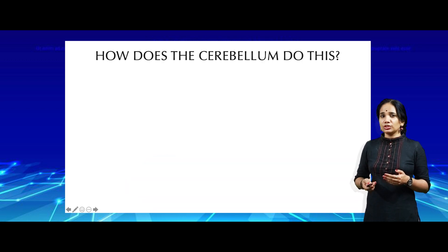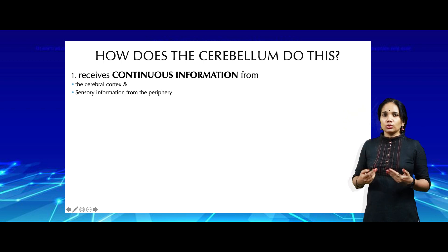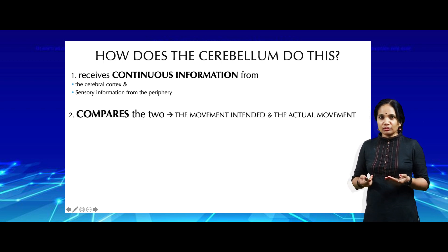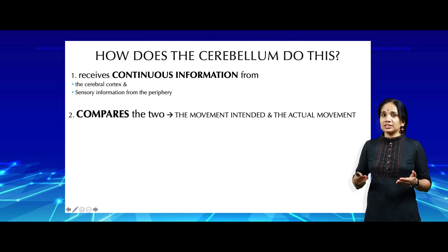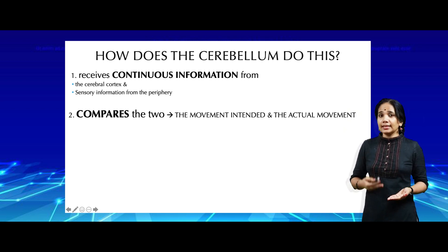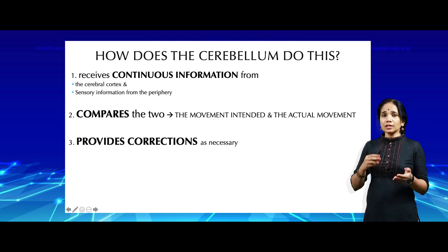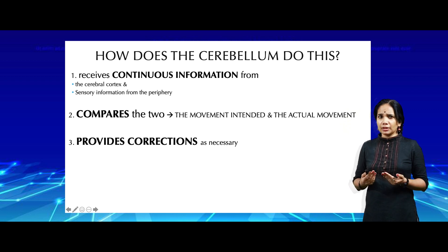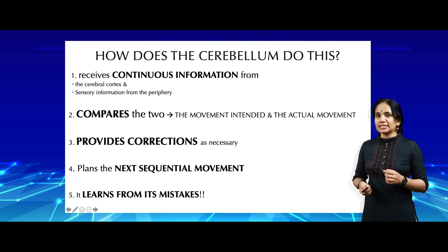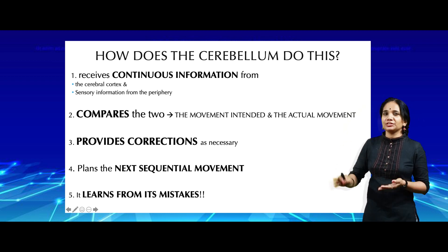So how does the cerebellum manage to do this so beautifully? Basically it receives a constant source of information from the cerebral cortex as well as from peripheral receptors such as muscle tendon organs and Golgi tendon organs. Once it receives this information it compares — because when the cerebral cortex sends in collaterals into the cerebellum, it is essentially telling the cerebellum what it is planning to do. The cerebellum then compares this with the input coming from the periphery to see whether what the body has done is actually what was intended.